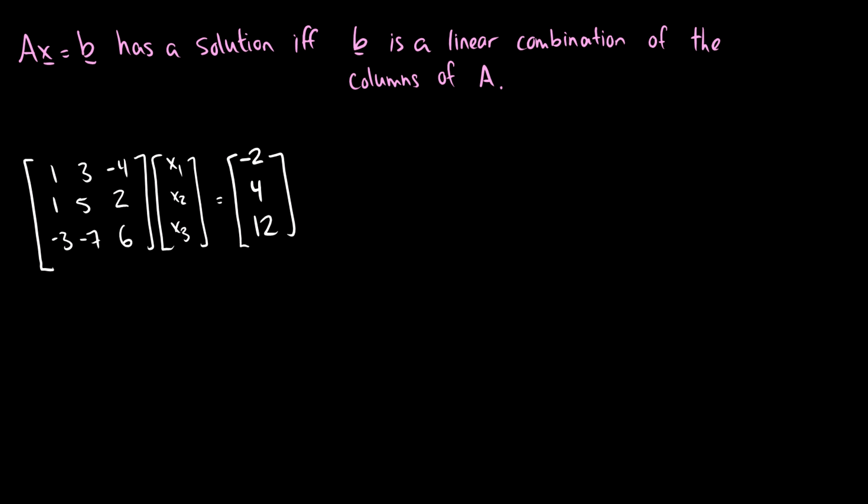So what do we say? We say Ax equals b has a solution if b is a linear combination of the columns of A. This was shown before when we solved x1a1 plus x2a2 all the way up to xnan is equal to b. We did that already. So now we're saying because we can go that extra step, this is the same occurrence.